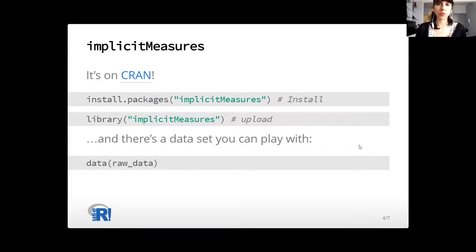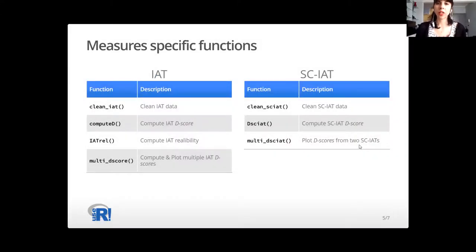Implicit Measures is available on CRAN, so you can download it and load it in your R environment. The package comes with a toy dataset of raw data that you can use to familiarize yourself with its functions. We have specific functions for cleaning and computing the IAT and the Single Category, a function to compute IAT reliability, and since there are six different algorithms for computing the IAT D-score, we also have a function that simultaneously computes and plots all available algorithms. For the Single Category, we have a function that plots together the results from two different Single Categories.